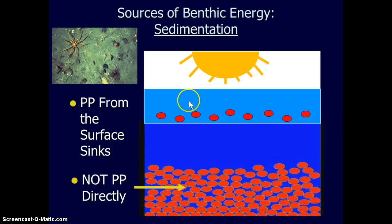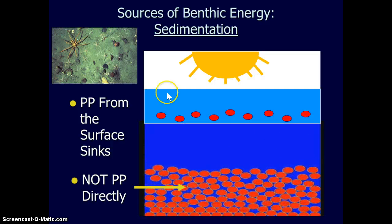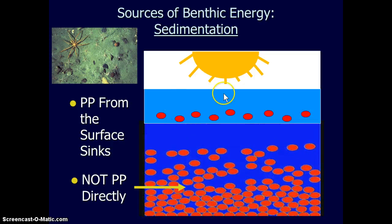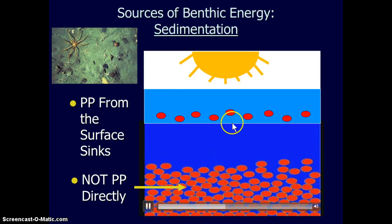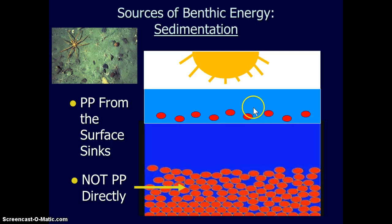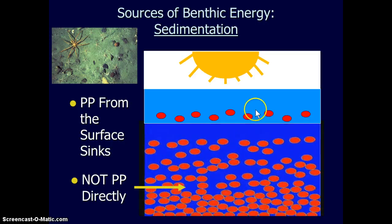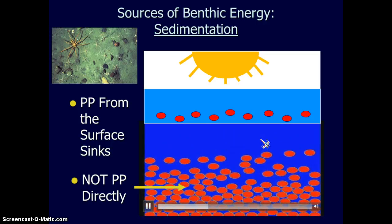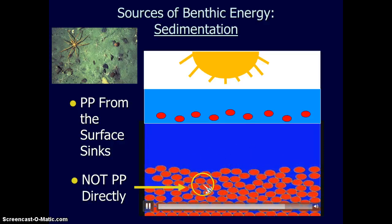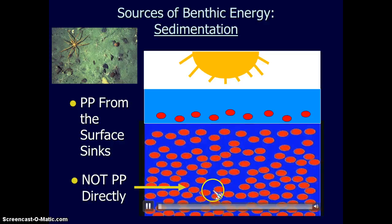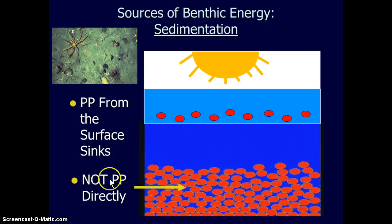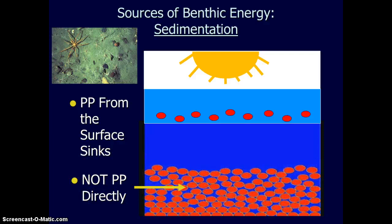In the ocean water column, up in the surface where sunlight occurs, we have phytoplankton fixing carbon and consumers consuming the phytoplankton. This accumulates in a particulate organic matter pool that, through sinking and migration, can reach the deep ocean, then settles through a process we call sedimentation to the seafloor. That is organic matter input to the benthos — so it's not primary production directly; it's important to remember.